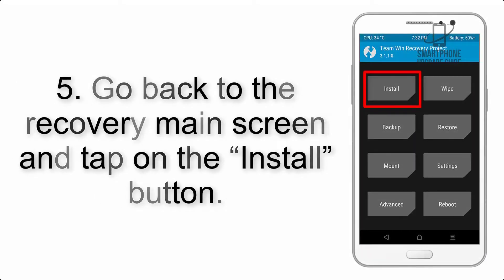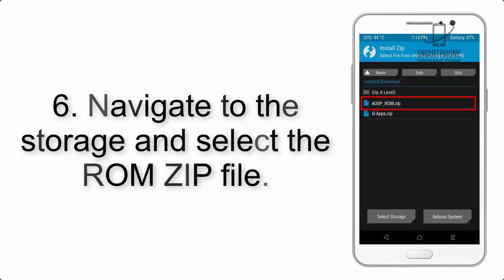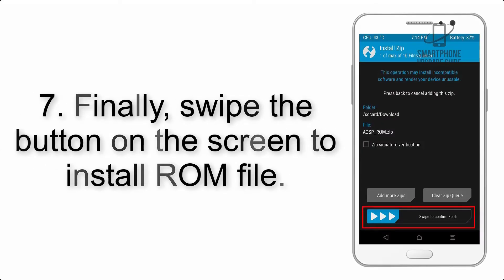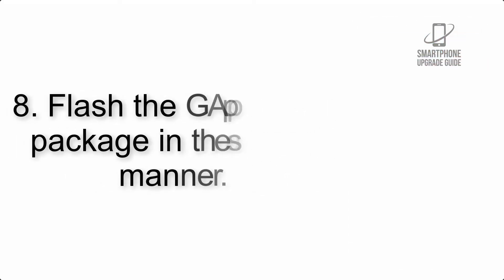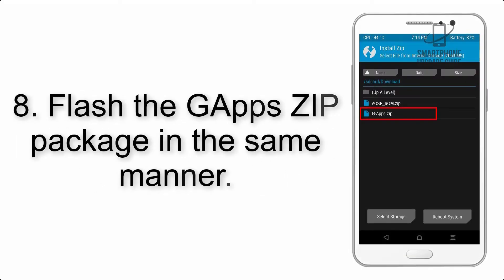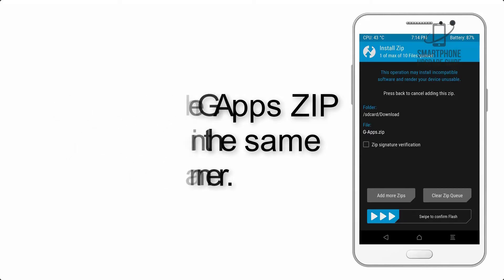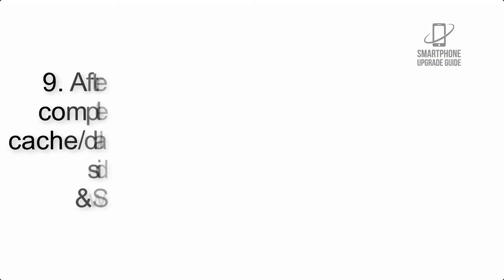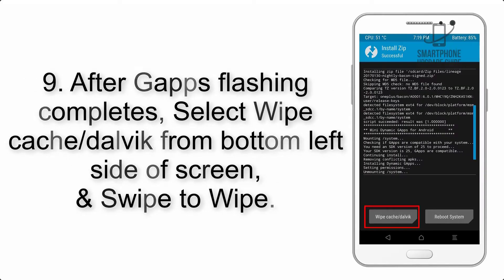Step 5: Go back to the recovery main screen and tap on the Install button. Step 6: Navigate to the storage and select the ROM zip file. Step 7: Finally, swipe the button on the screen to install the ROM file. Step 8: Flash the GApps zip package in the same manner.